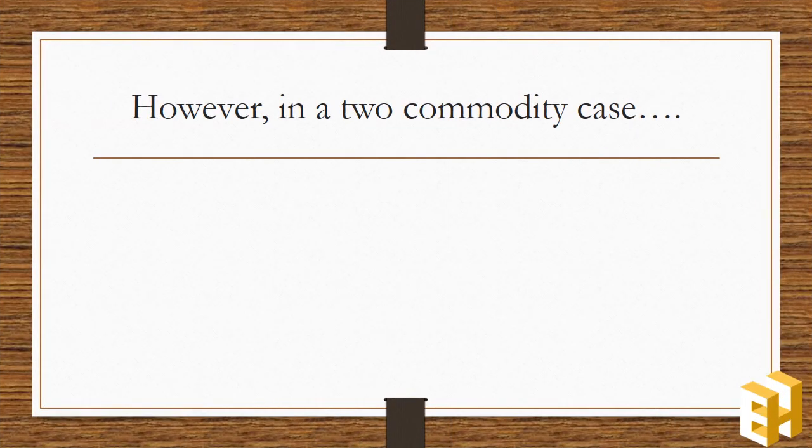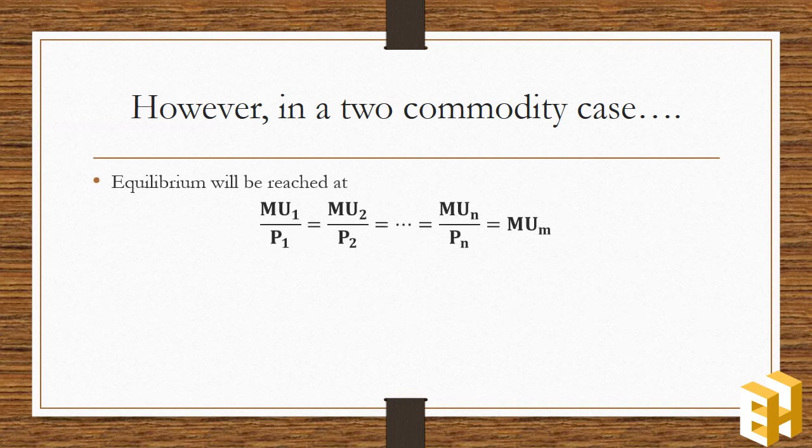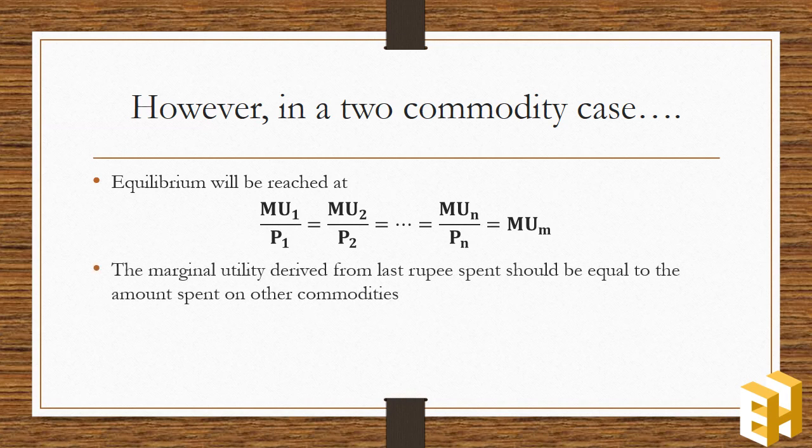In a two commodity case, equilibrium will be attained where the ratio of marginal utility of a commodity to its price for all the commodities is equal to the marginal utility of money. In other words, marginal utility derived from the last rupee spent should be equal to the amount spent on other commodities. However, this is just the cardinal method.